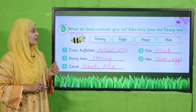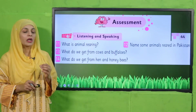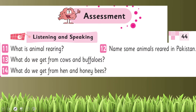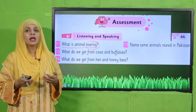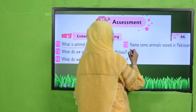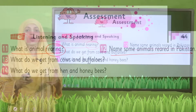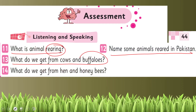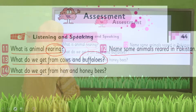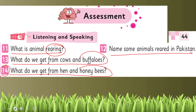Now let's quickly move forward towards the evaluation. Open page number 44 for oral evaluation. Question 11: What is animal rearing? Animals raised for different products and for profit are called animal rearing or livestock. Question 12: Name some animals reared in Pakistan — cows, buffaloes, hens, ducks, honeybees. Question 13: What do we get from cows and buffaloes? We get meat, milk, and leather. Question 14: What do we get from hen and honeybee? From hen we get egg and meat, and from honeybees we get honey.